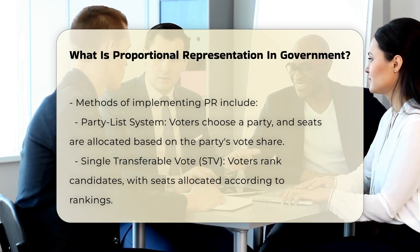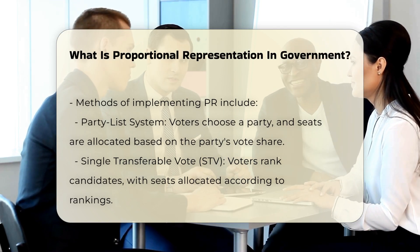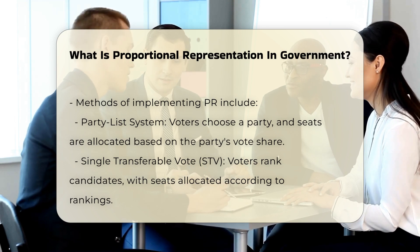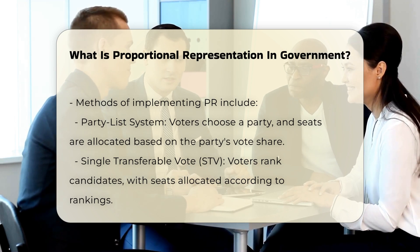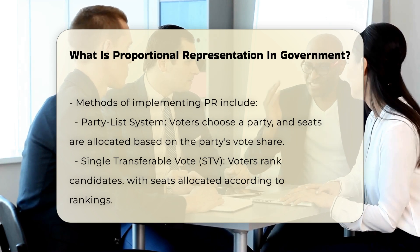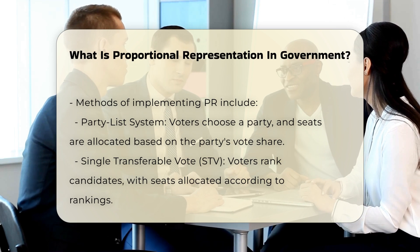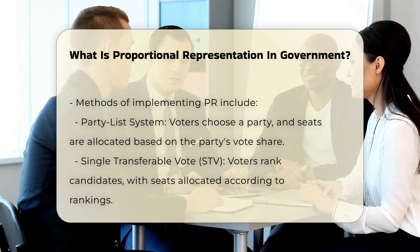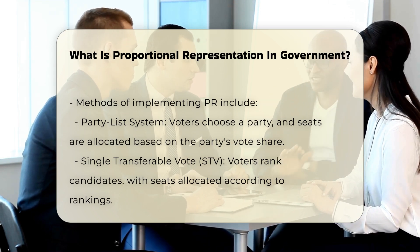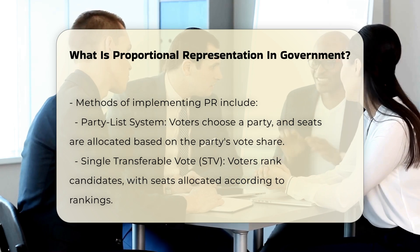Systems of Proportional Representation: There are several methods to implement proportional representation. Party List System: Voters cast their ballots for a party's list of candidates, and each party receives a share of seats proportional to the votes received. For example, if a party gets 40% of the votes, it would win approximately 40% of the seats.